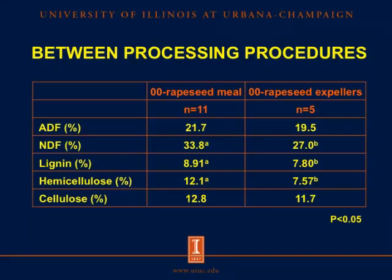For fiber in rapeseed products from different oil extraction procedures, the concentrations of ADF and cellulose were not different, but NDF, lignin, and hemicellulose were greater in 00 rapeseed meal.